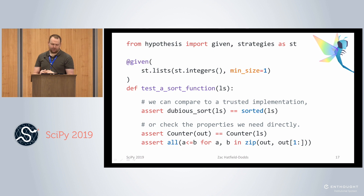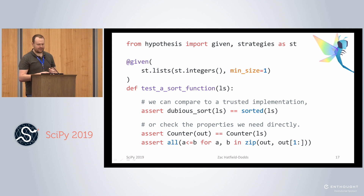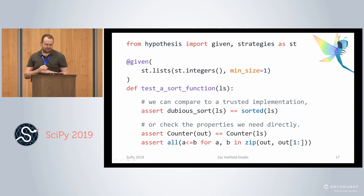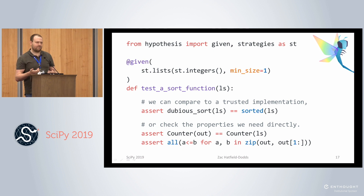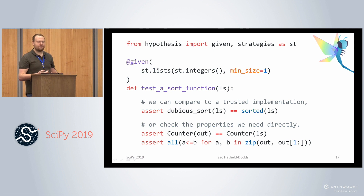This is what it looks like. You import the 'given' decorator from Hypothesis and the strategies module for describing your data. In this case, we're testing a dubious sorting function which sorts lists of integers. We say: given lists of integers with at least one integer — there's not much interesting about sorting the empty list. We can either compare our dubious function to a trusted function like Python's sorted built-in, or check that the output is correct without needing to know how to sort at all — particularly important in science where the only way to get the output is to run the model.